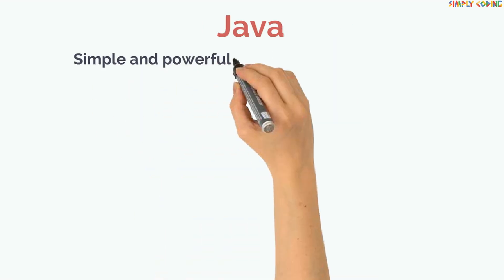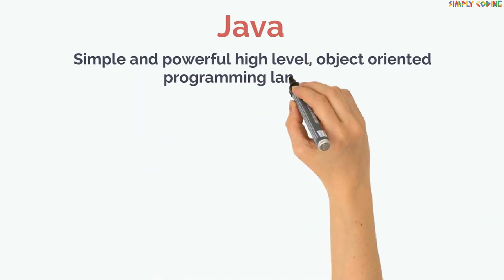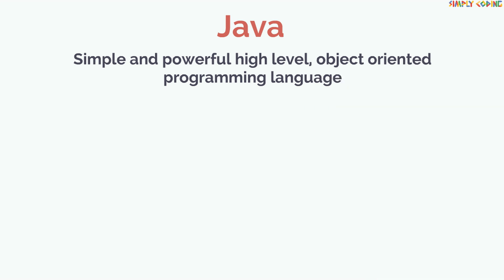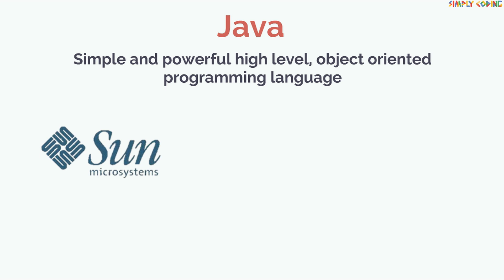Java is a simple and powerful, high-level, object-oriented programming language. It originated at Sun Microsystems in 1991.